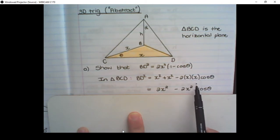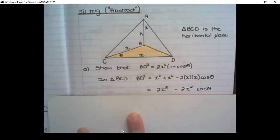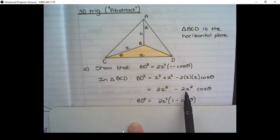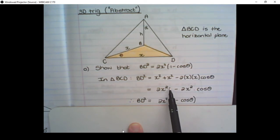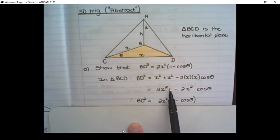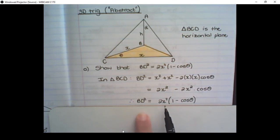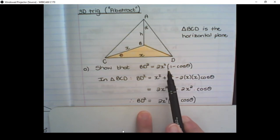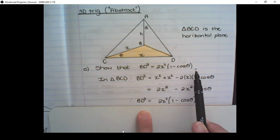The last term also becomes 2X²·cos θ. Then 2X² is a common factor in both terms, so I factorize by taking out 2X². This leaves a placeholder of 1 in the first term and cos θ in the second term. I have now shown that BD² = 2X²(1 − cos θ).